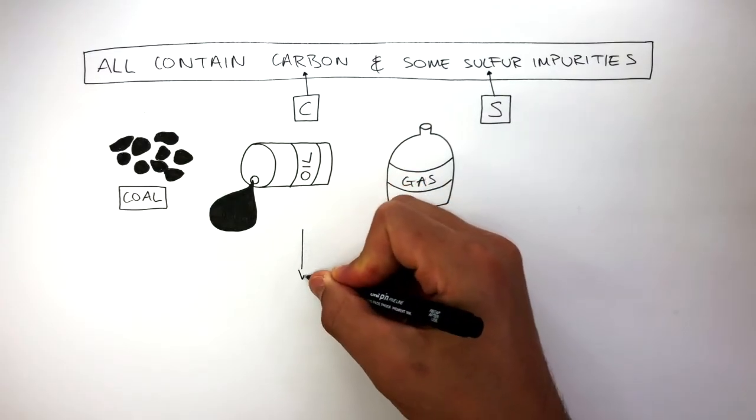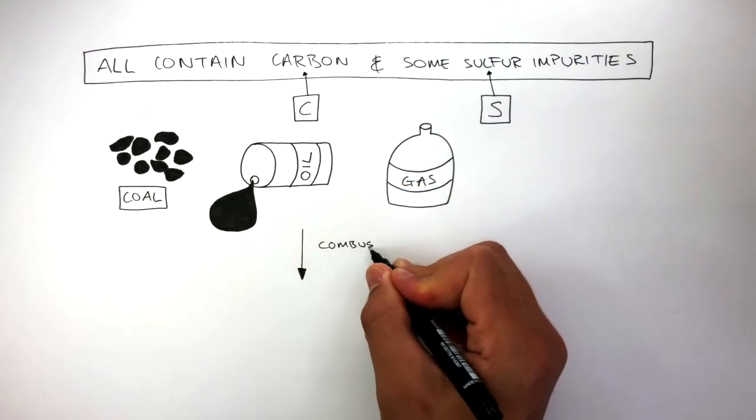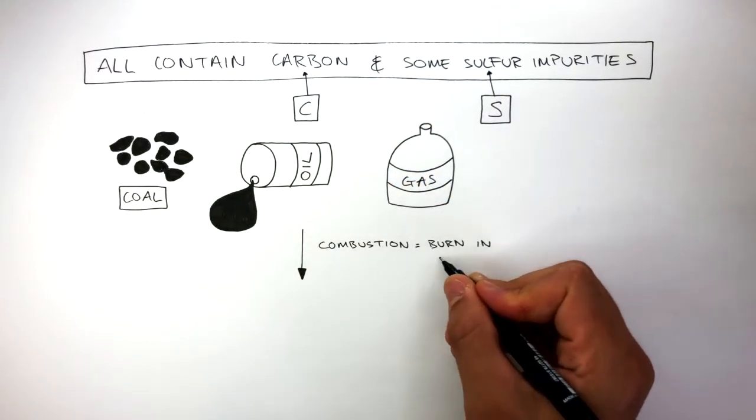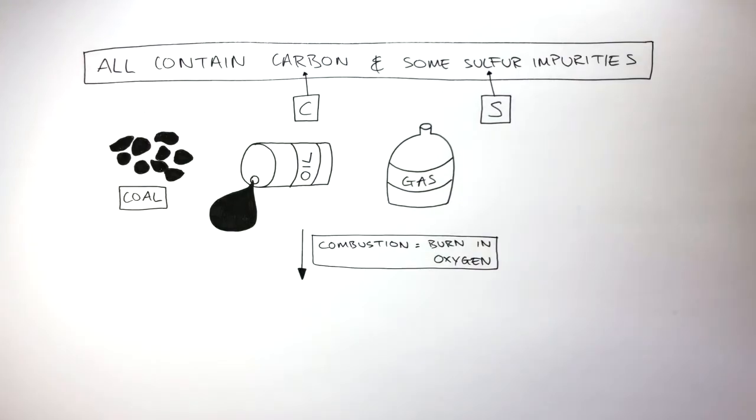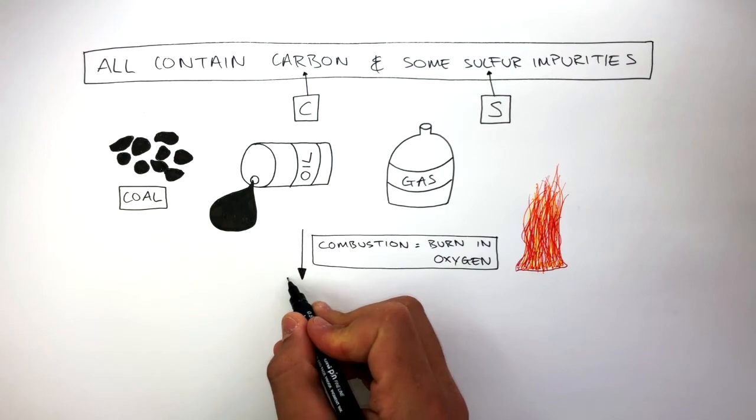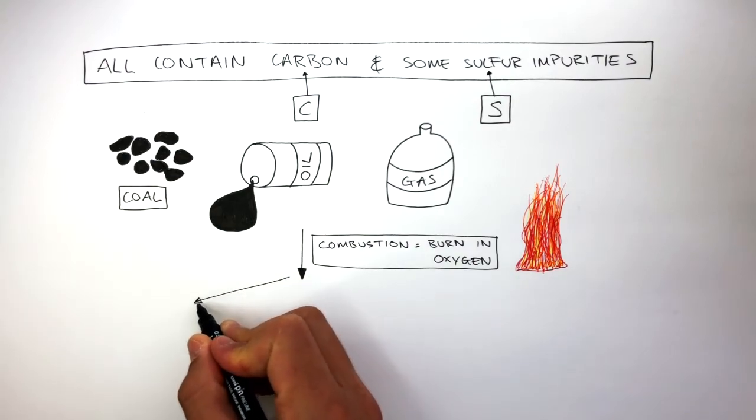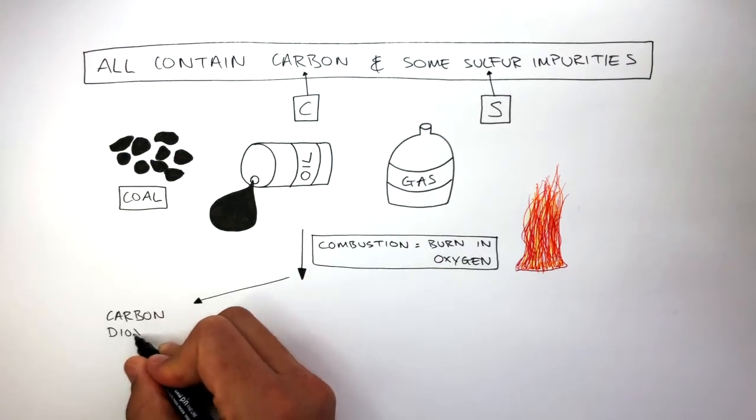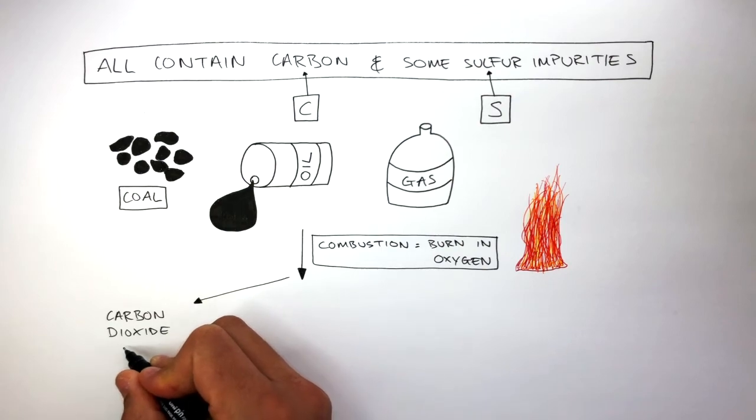The chemical symbol of carbon is a capital C and the chemical symbol of sulfur is a capital S. Now, these fossil fuels can all undergo combustion where they burn in oxygen. During combustion, these fossil fuels release a lot of thermal energy. During combustion, the carbon combines with oxygen, forming carbon dioxide, which has a molecular formula of CO2.